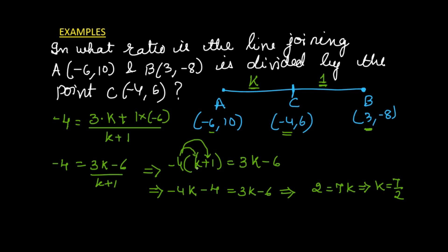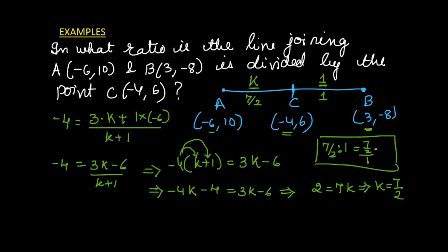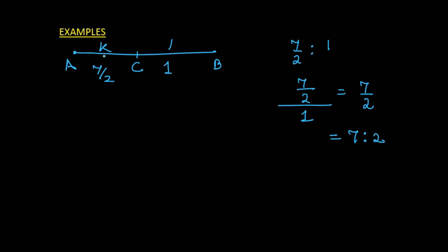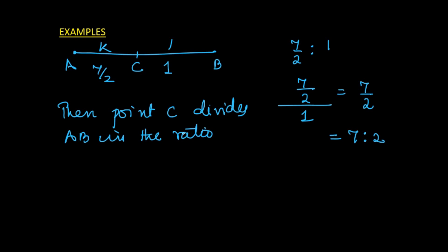We have got k = 7/2. This means that point C is dividing the line in the ratio 7/2 is to 1, which is the same as 7 is to 2. So either you say the ratio is 7/2 : 1 or 7 : 2 — it's one and the same. Whatever fractional value of k you get, that will become the ratio in which the line is getting divided.